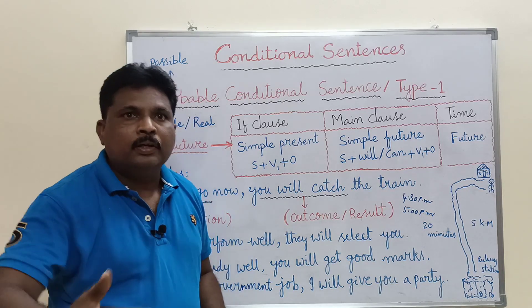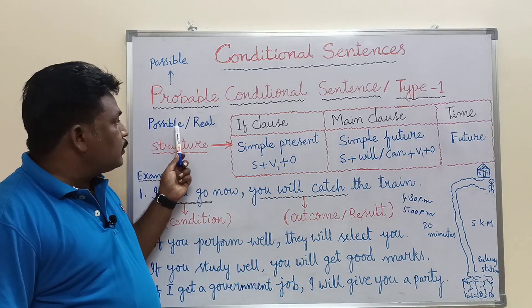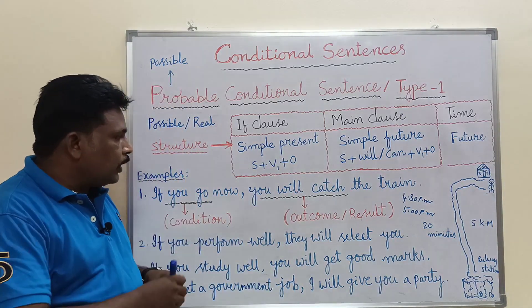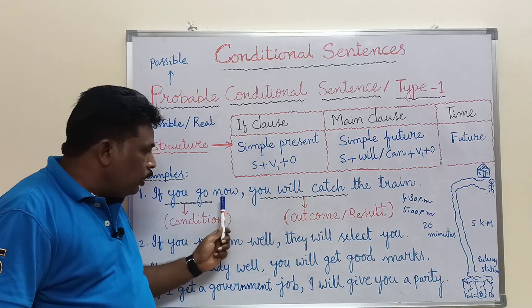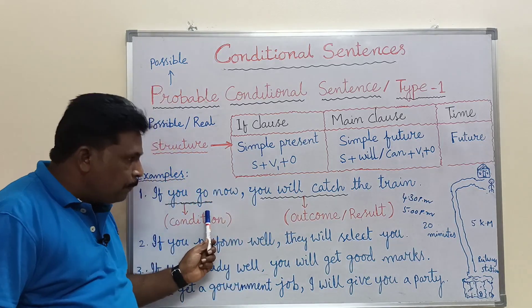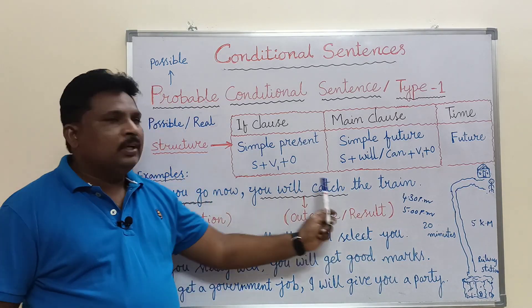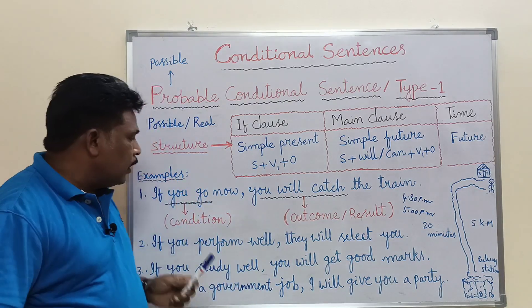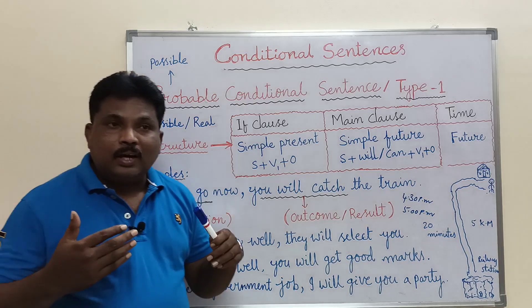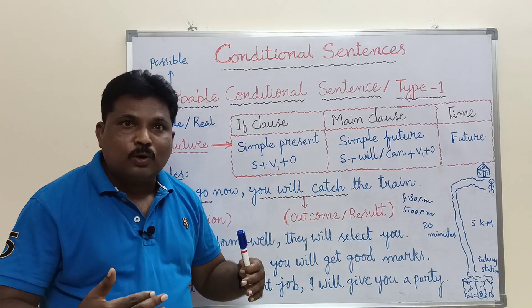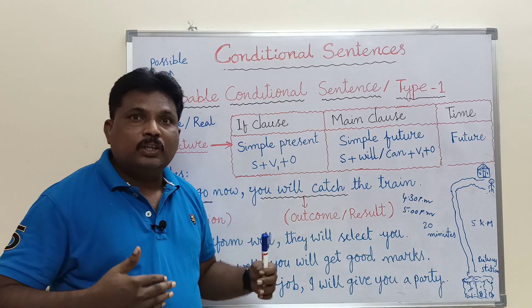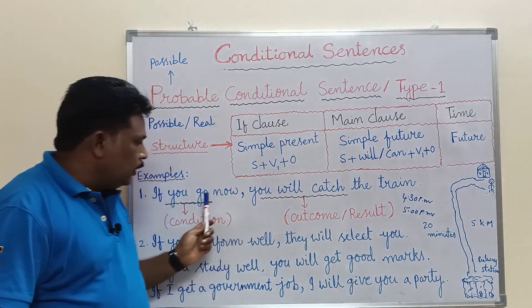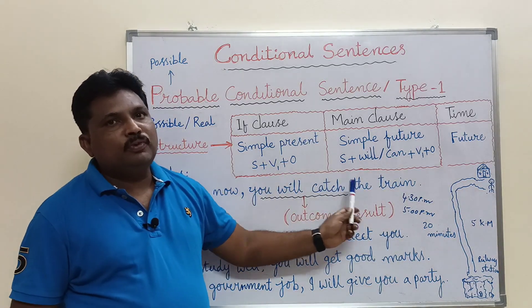So the probability or possibility of the action is high — the action is more likely to happen. That is why we call it a probable or possible or real condition. Remember, if the condition is fulfilled, the action happens; if not, it will not happen. But as a speaker, I know his temperament and expect that he starts now, so it is probable that he catches the train.